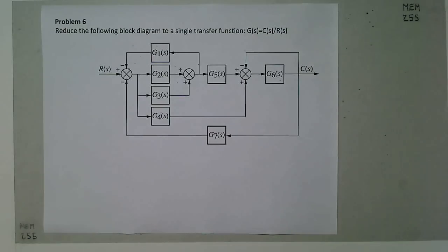The main rules I'll be applying: blocks in parallel followed by a summer simply sum the transfer functions. Also, the feedback rule—if I have a forward gain g and a feedback gain h, then the transfer function of that small loop is just g over one plus gh.